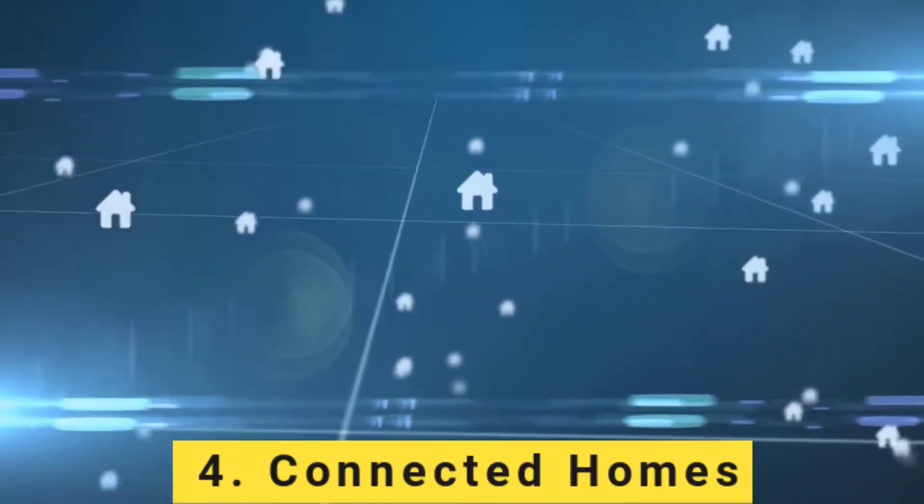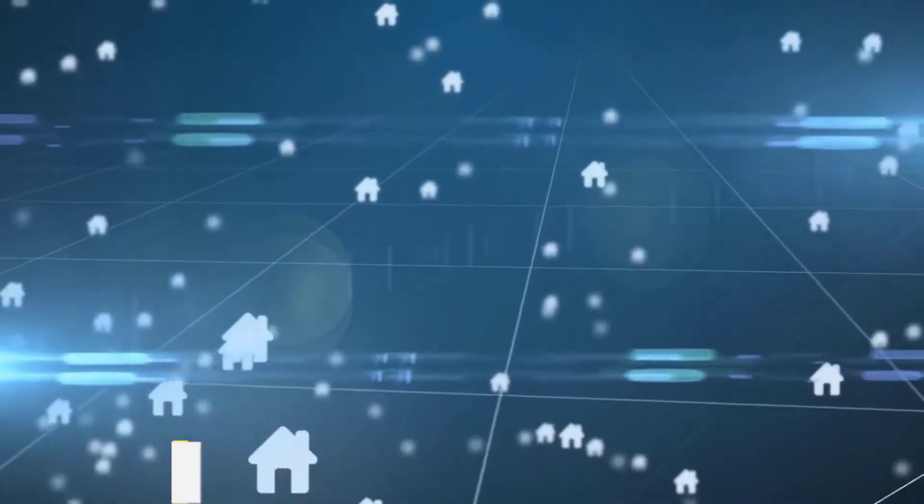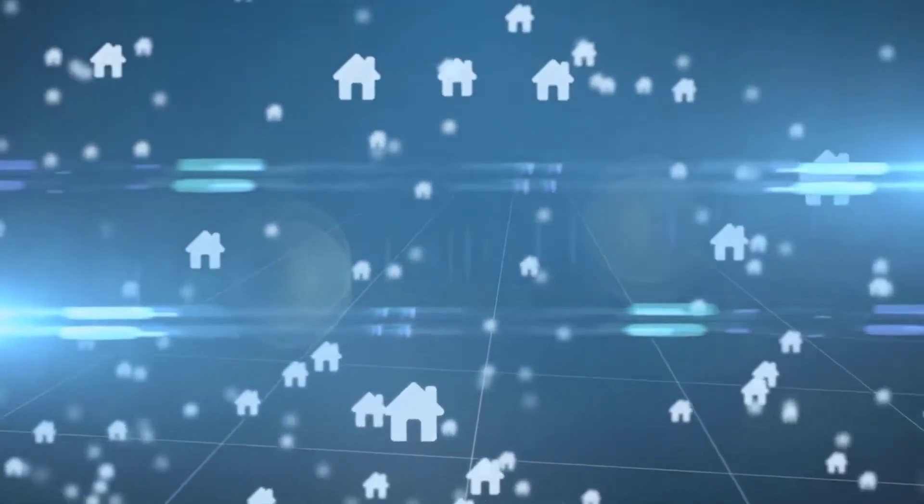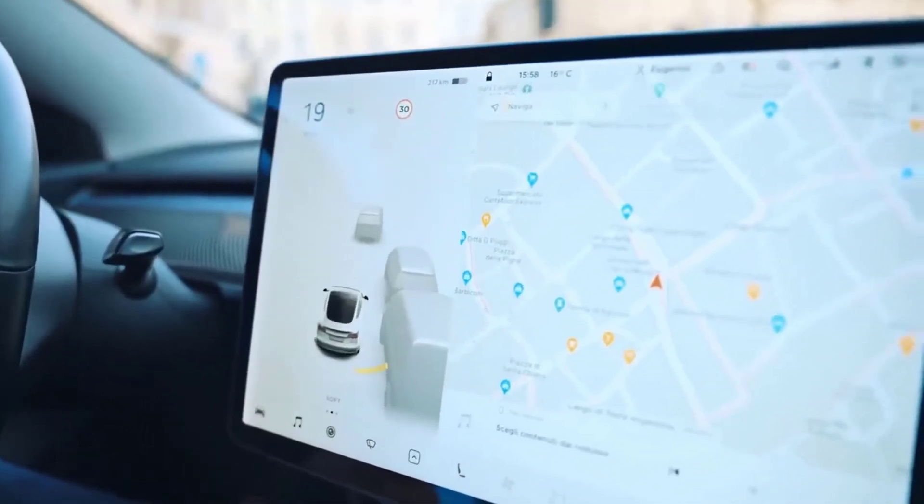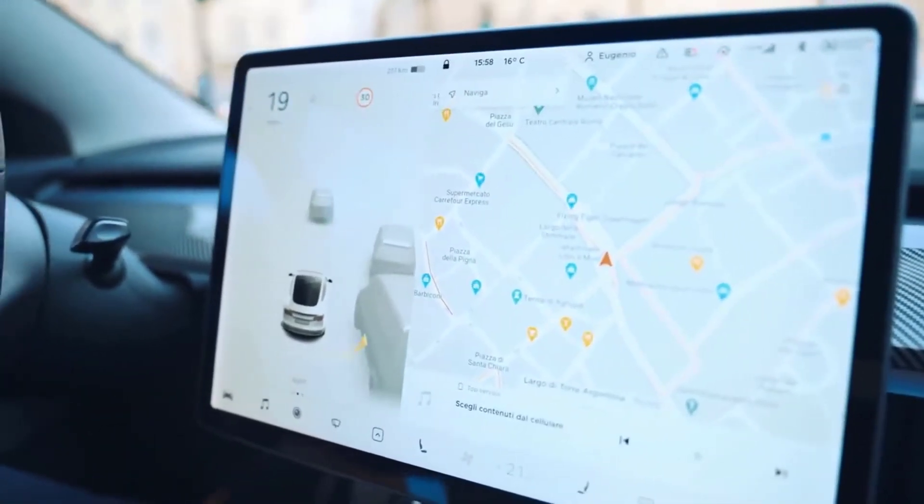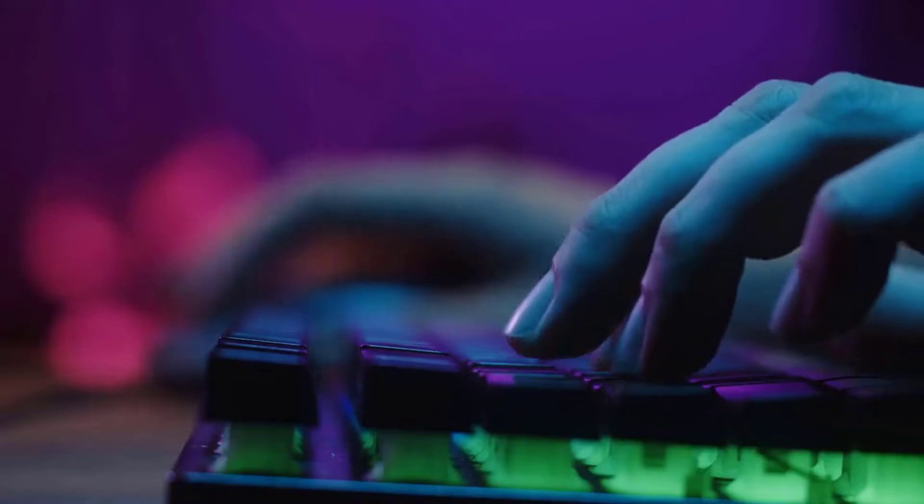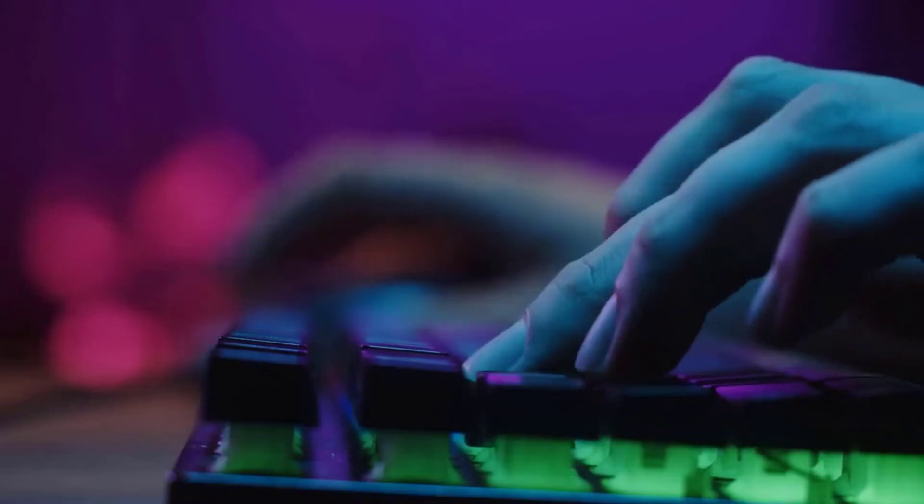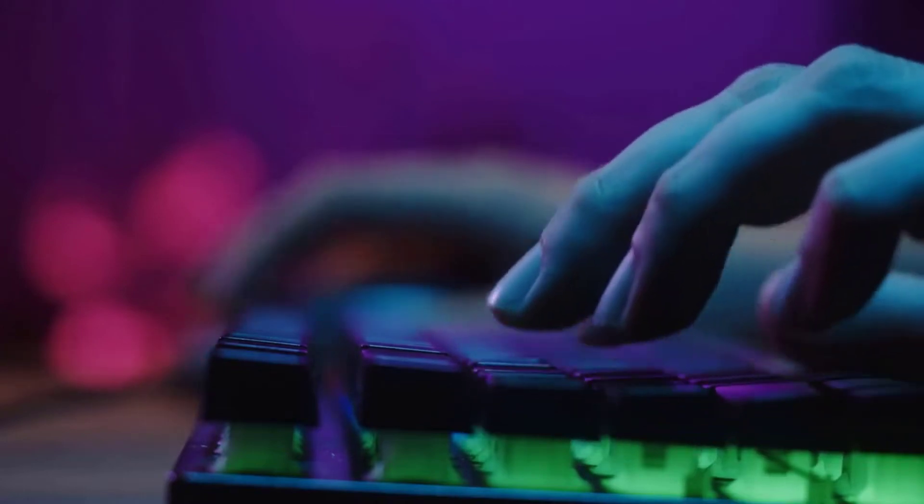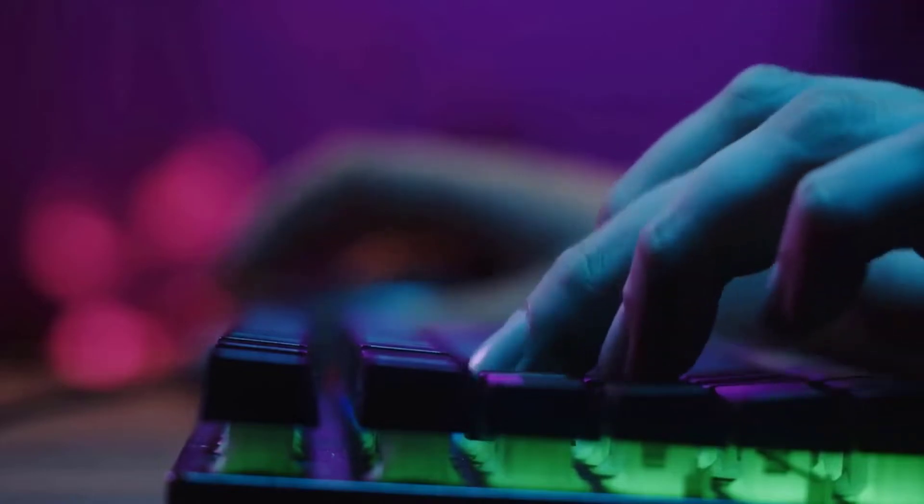Number 4: Connected homes. As the world becomes more and more connected, so too do our homes. More and more devices are being equipped with internet capabilities, allowing us to control them remotely or receive updates and alerts from them. This trend is only going to continue, with an estimated 20.8 billion devices expected to be connected to the internet by 2020.